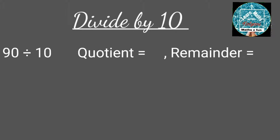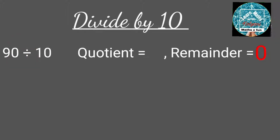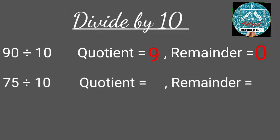When 90 is divided by 10, the remainder is the 1's digit, that is 0, and the quotient is 9. When 75 is divided by 10, the remainder is the 1's digit, that is 5, and the quotient is 7.